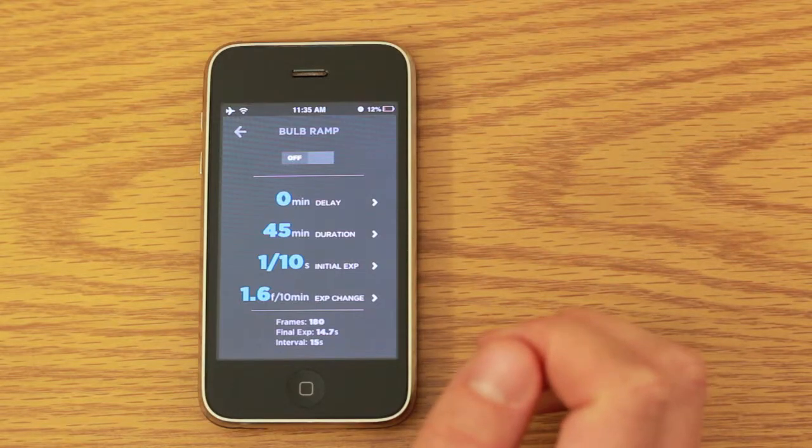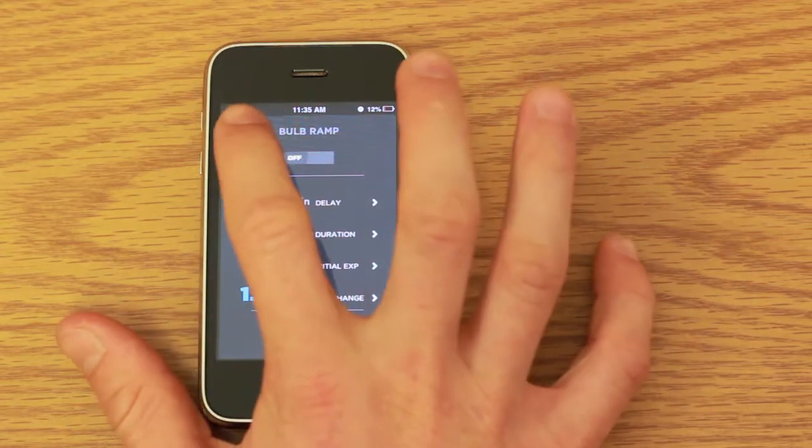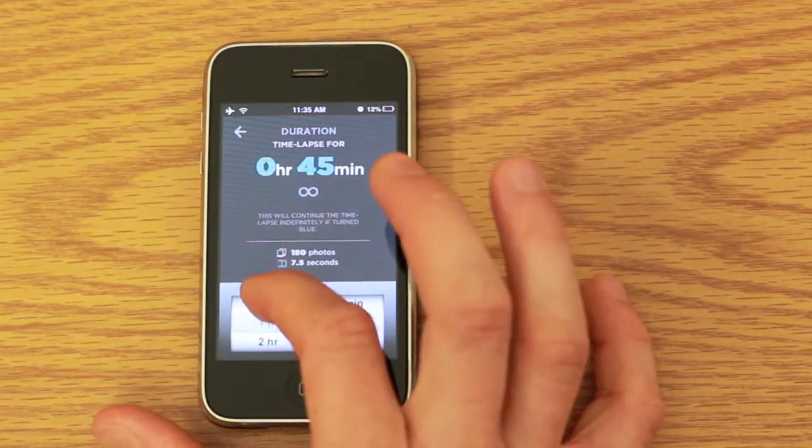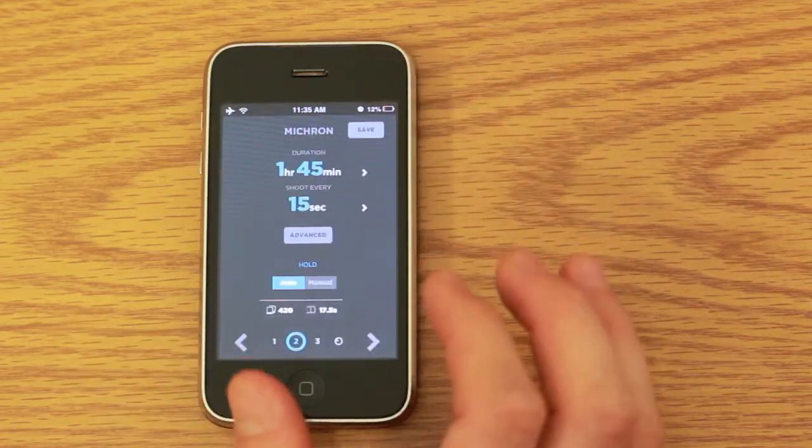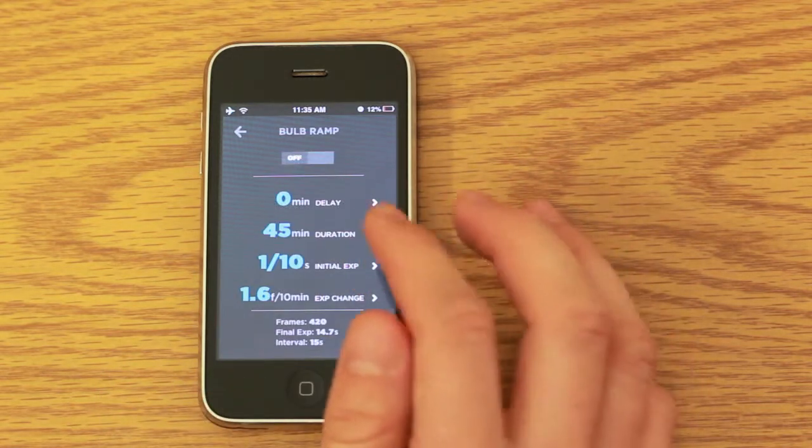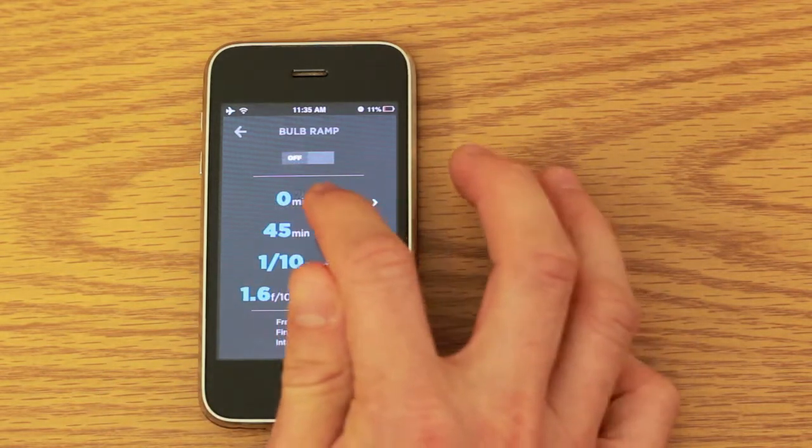Now an example of a good use of the delay is if I wanted to take a 1 hour, 45 minute time lapse, but I didn't want the bulb ramping to take place until the final 45 minutes. Then I would just go into the bulb ramping app, and I would set my delay as 1 hour.